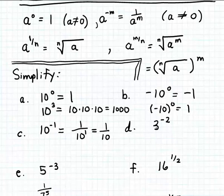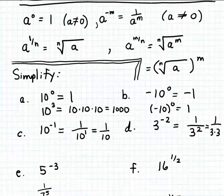In example D, how do we simplify 3 to the minus two power? Again, when raising a base to a negative integer, take the reciprocal and make the exponent positive. So 3 to the minus two equals one over 3 squared, which is one over three times three, and three times three is nine. So 3 to the minus two simplifies to one ninth.